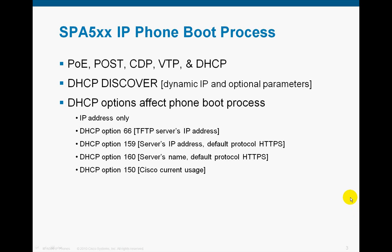DHCP options affect the way the phone boots up. If the phone gets only an IP address, or if it gets Option 66 — which could be a TFTP server's IP address — Option 159, which would be a server's IP address, Option 160, which could be a server's name, or Option 150.